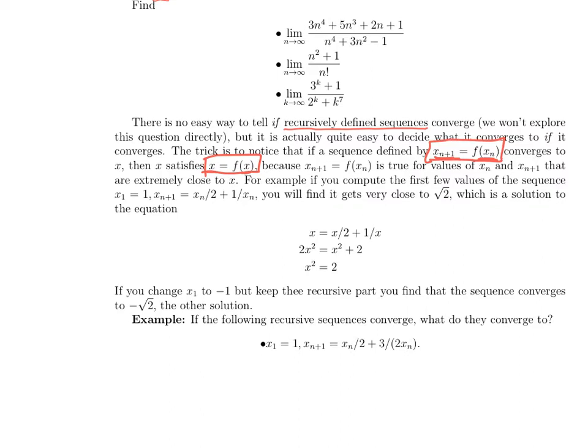So here's an example. If we take the sequence recursively defined—this is my favorite sequence, remember we explored it and found that it went to the square root of 2—recursively defined by x_{n+1} = x_n/2 + 1/x_n, then if it converges, its limit must satisfy x = x/2 + 1/x, the same equation with x substituted in for x_n and for x_{n+1}.